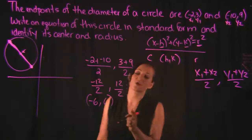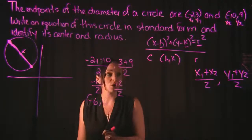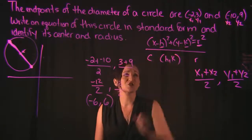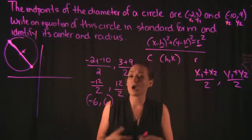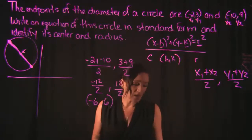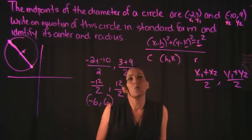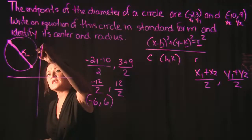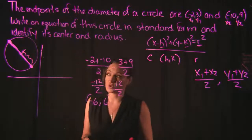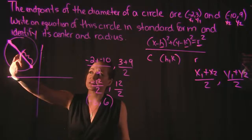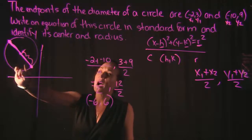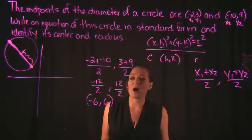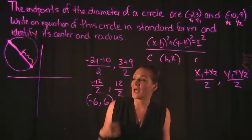Negative 2 plus negative 10 is negative 12 over 2, and 3 plus 9 gives us positive 12 over 2. Simplifying these fractions gives us negative 6 and positive 6. That represents the center of the circle. So now we know h and k. Next we need to figure out r, the radius.